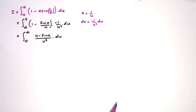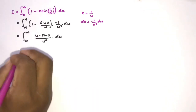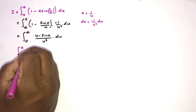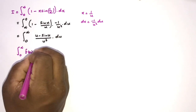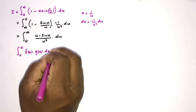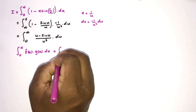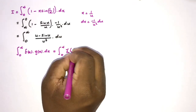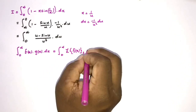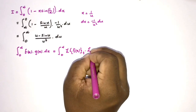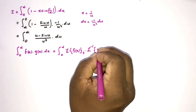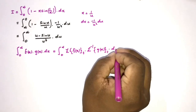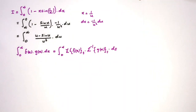Now we use the Parseval-type identity for Laplace transforms, discussed in previous videos — links will be in the description. The identity states: the integral from 0 to infinity of f(x) times g(x) dx equals the integral from 0 to infinity of the Laplace transform of f(x) times the inverse Laplace transform of g(x) ds.